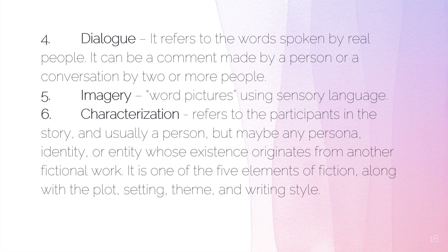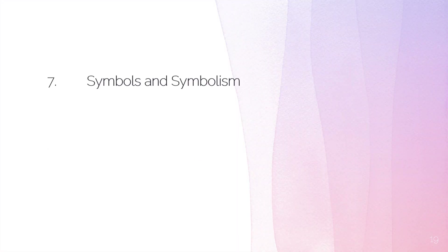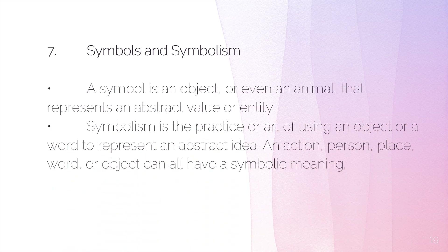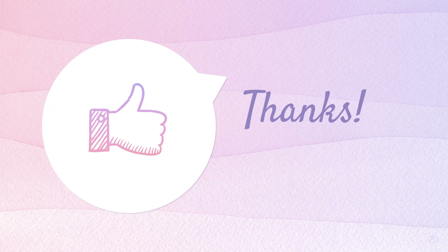Characterization is one of the five elements of fiction, along with plot, setting, theme, and writing style. In creative non-fiction, we must ensure that the characters included in our story are verifiable or observable around us. Finally, we have symbols and symbolism. A symbol is an object or animal that represents an abstract value or entity, and symbolism is the practice or art of using those objects to represent abstract ideas. Thank you for today.